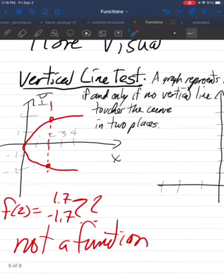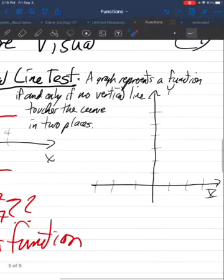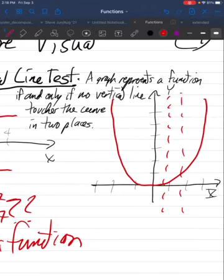And because I just showed you a vertical line that touches this curve in two places, it's not a function. On the other hand, here's one that is a function. Here, you draw any vertical line, it touches the curve in one place.